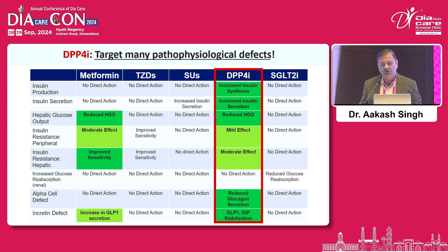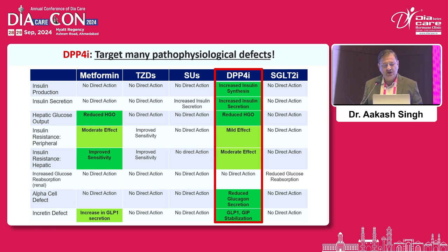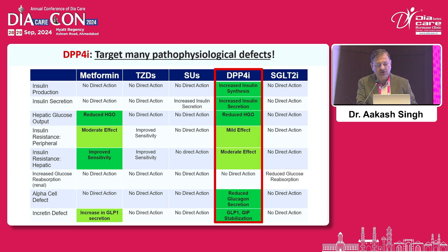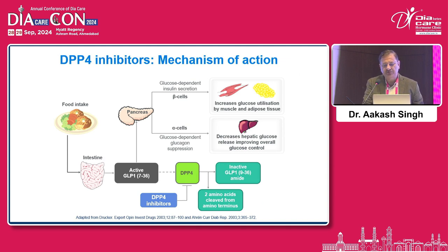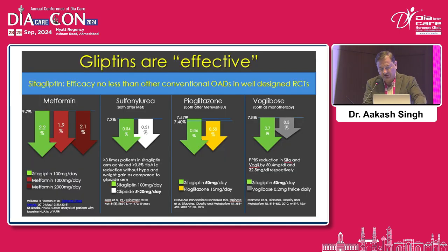DPP-4 inhibitors target many pathophysiologic defects — they increase insulin synthesis and insulin secretion, decrease hepatic glucose output, have a mild effect on peripheral insulin resistance, and a more pronounced effect on hepatic insulin resistance. They reduce glucagon secretion and increase GLP-1 and GIP levels, providing all the positive metabolic benefits. The metabolic benefits may be direct in the form of glucose-dependent insulin secretion and glucagon suppression. By inhibiting the DPP-4 enzyme, they increase intact GLP-1 levels, which is again beneficial for cardiovascular health.